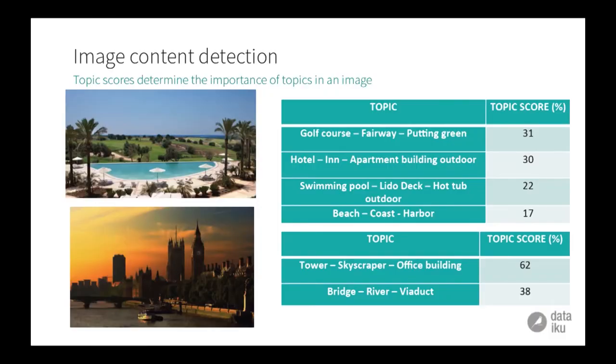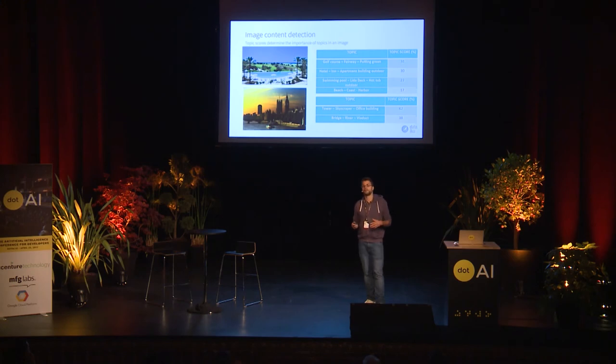What we get is: for the first image, golf course fairway putting green at 31% of the image, then information about the hotel, then information about the swimming pool, and then information about the beach — which is perfect because this is actually what we want to get. Each image is now defined in a space of 30 vectors. You may notice golf course here, which mostly comes from the labels in ImageNet, but it's not really important because what we do is actually a similarity between images — so it could be called anything, that would be the same thing.